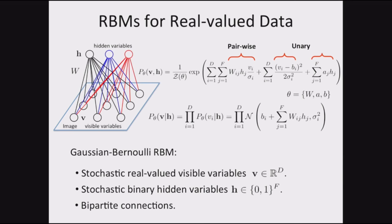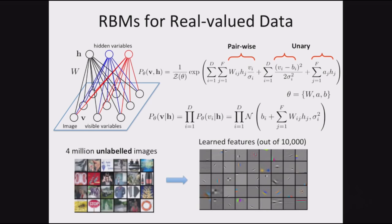You can extend these models to real-valued data. When dealing with images, a small change to the model makes the conditional probabilities Gaussians. Given the features, you can sample real-valued images. If you train this model on images, you tend to find edges — similar to what you'd see in sparse coding, ICA, and autoencoders. Every single image is made up by some linear combination of these basis functions.